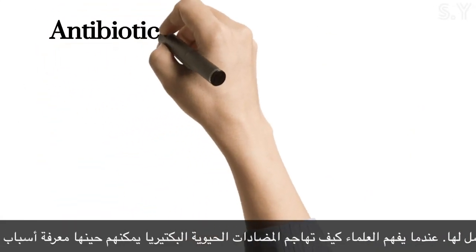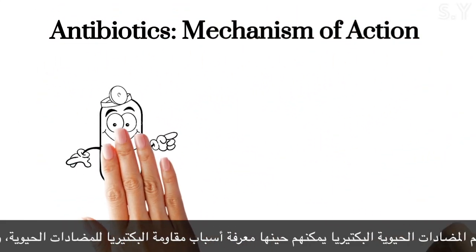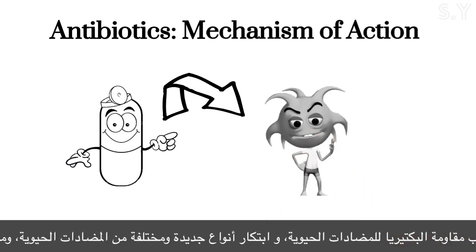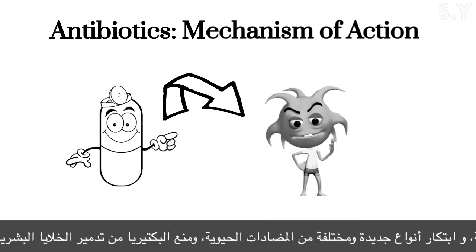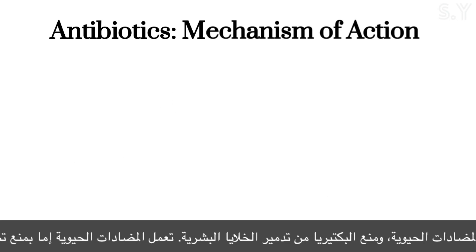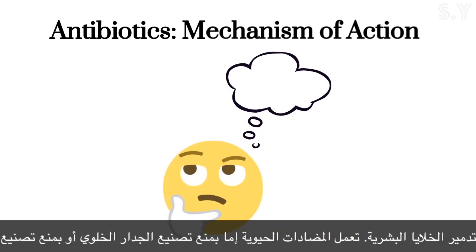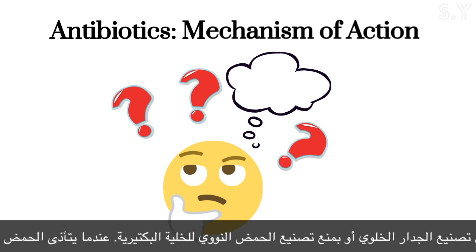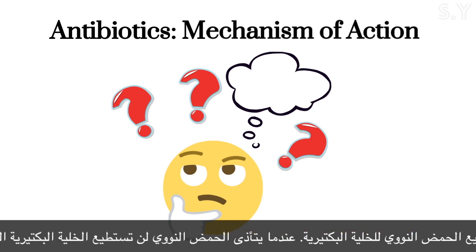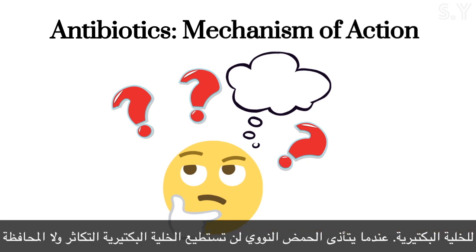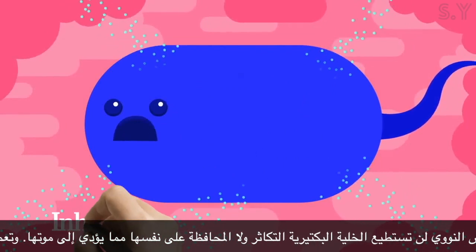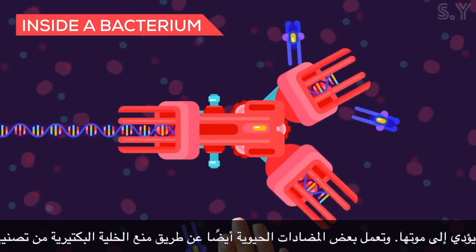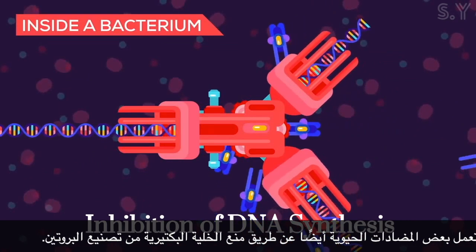Antibiotic mechanism of action: since antibiotics are used to treat bacterial infections, scientists try to understand their mechanism of action. When scientists understand why antibiotics impact bacteria, they can know the reasons behind antimicrobial resistance, create new kinds of antibiotics, and prevent damaging human cells. This can be done by the inhibition of cell wall synthesis or by the inhibition of DNA synthesis.